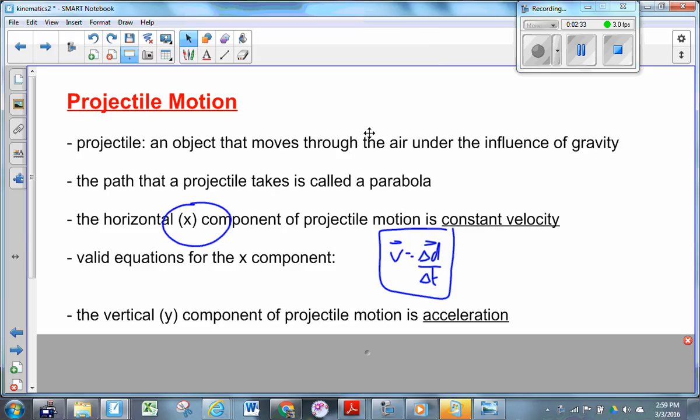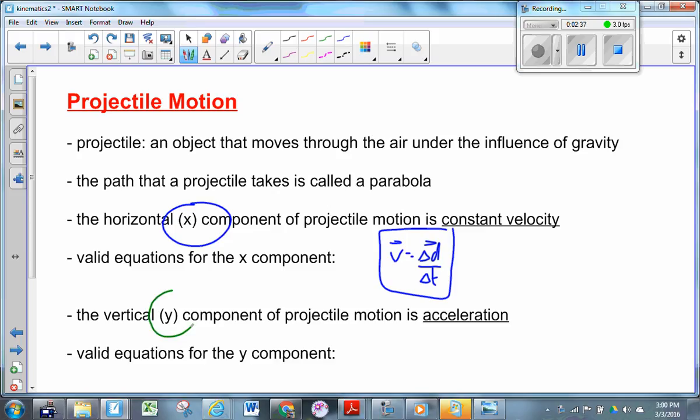Rather, for the Y component, we're going to have to use one of our acceleration equations. There's five of them, remember. I mean, all of those acceleration equations are valid. The one we're going to use most often is this one. D is equal to ViT plus one-half AT squared.